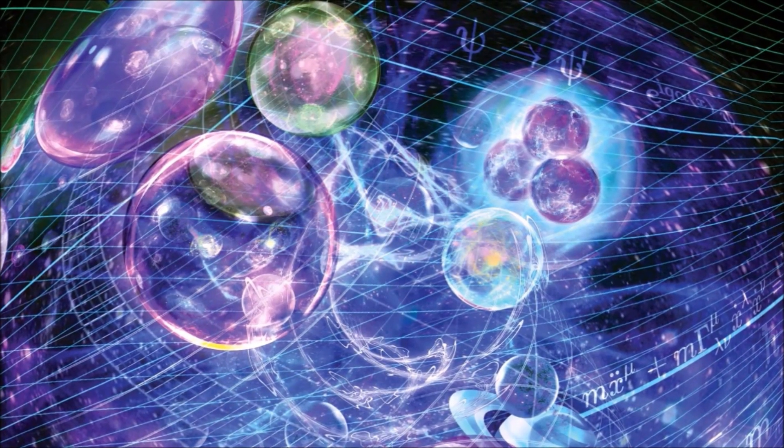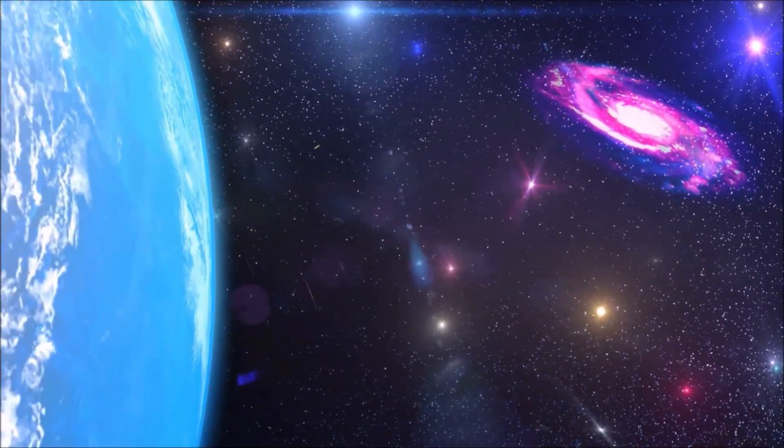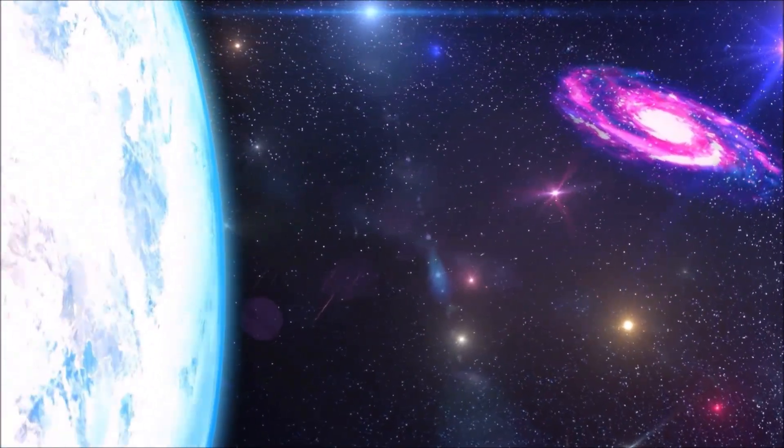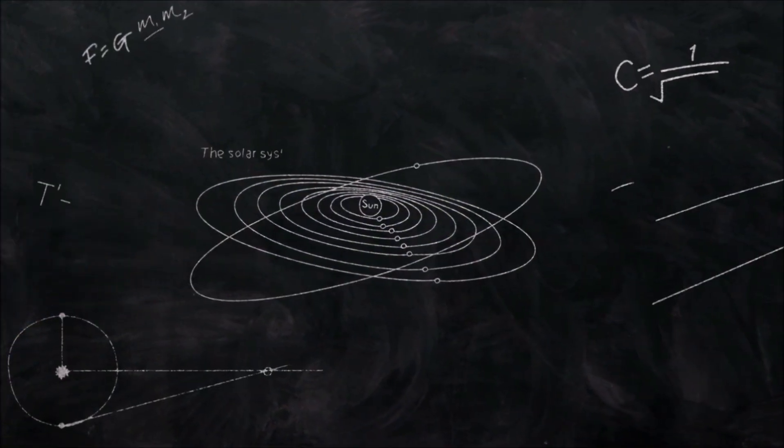type 1 multiverse is called Quilted Multiverse, and it's possibly one of the easier ones to understand, since it's based on the assumption of an infinite universe and the consistency of physical laws.